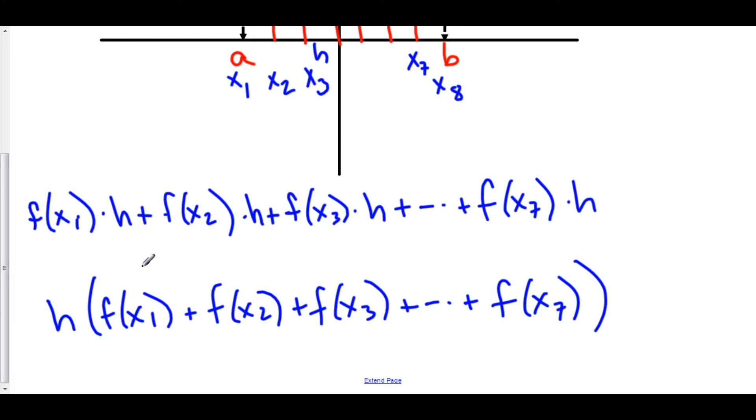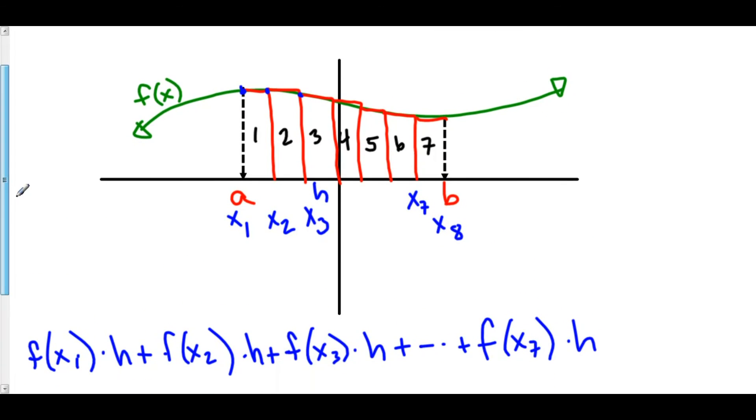Now at this point, you will notice that we did not use x sub 8 in our formula. And the reason for this is we're using a left Riemann approximation in this particular example. We're using the left hand side of each of these rectangles. X sub 8 falls on the right hand side of these rectangles. So we didn't use it.